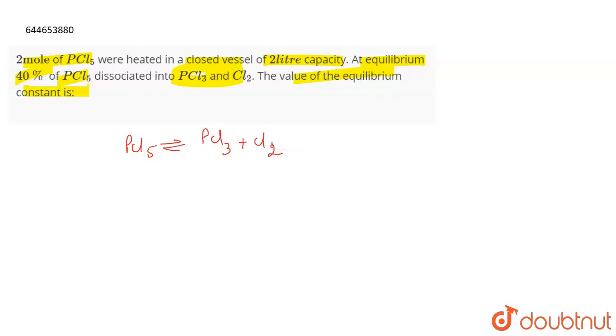Okay, so the reaction is PCl5 dissociates to give PCl3 and Cl2. All are in gaseous state. Initially, at time t equals zero, the number of moles of PCl5 are two.